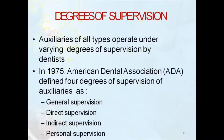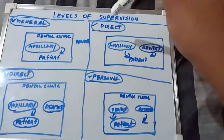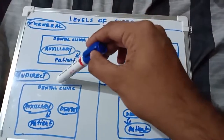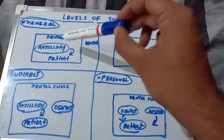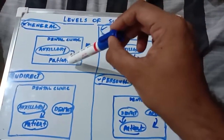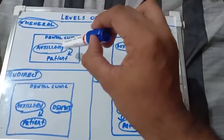I have a diagrammatic representation so you will have a better idea once you see it, and then we'll move on to the content. The levels of supervision are: general supervision, indirect supervision, direct supervision, and personal supervision. It refers to how the dentist is supervising the auxiliary while procedures are being carried out on the patient.